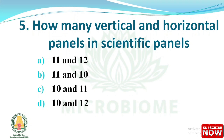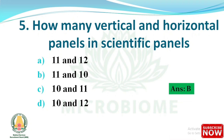Next question: how many vertical and horizontal panels are there in the scientific panels? Options are: 11 and 12, 11 and 10, 10 and 11, 10 and 12. The right answer is option B: 11 and 10 — that is 11 vertical and 10 horizontal panels.